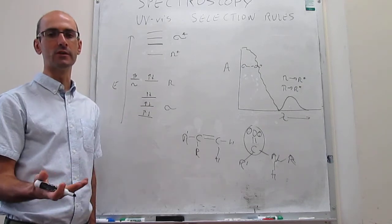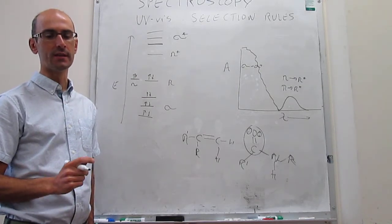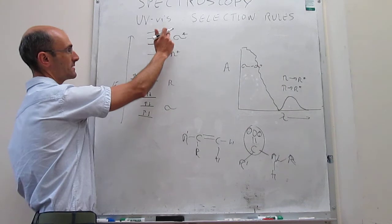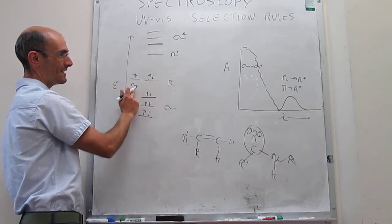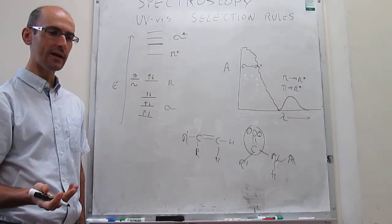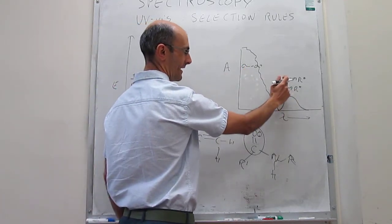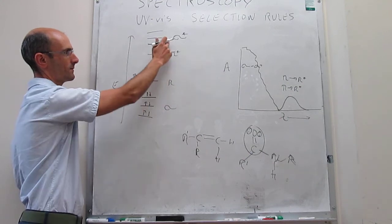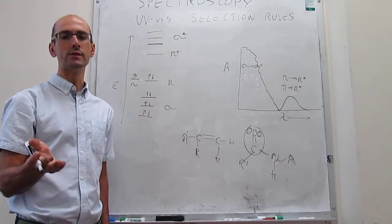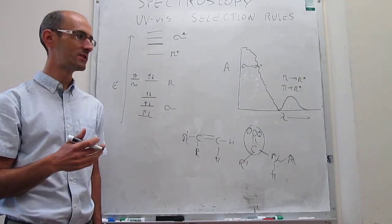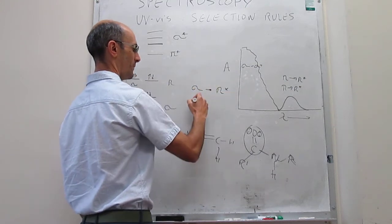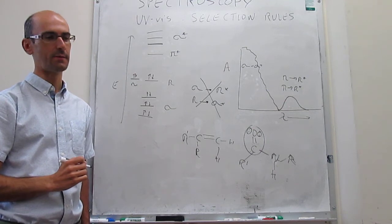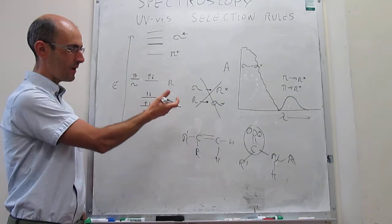We still have to talk about the specific selection rules. We have discussed sigma-to-sigma star, pi-to-pi star, and n-to-pi star transitions. The question is whether we can also have sigma-to-pi star or pi-to-sigma star transitions. It turns out that when you solve the transition dipole moment integral, the specific selection rule tells you that sigma-to-pi star and pi-to-sigma star transitions are actually forbidden — they are not allowed and you never see those in UV-Vis spectra.